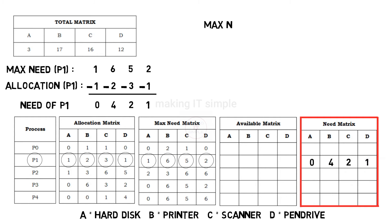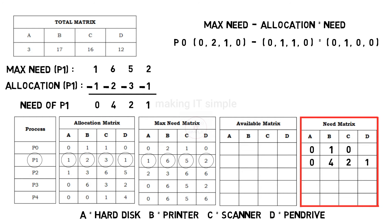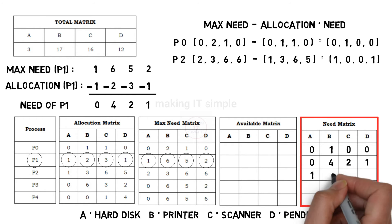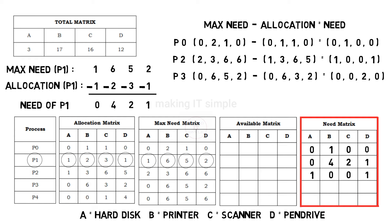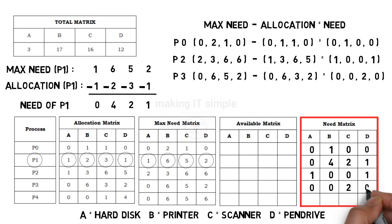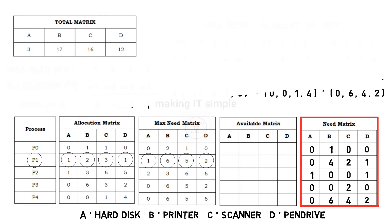So P1's need matrix will be 0, 4, 2, and 1. Need matrix is simply max need matrix minus allocation matrix. So the need of P0 will be 0, 1, 0, and 0; need of P2 will be 1, 0, 0, and 1; need of P3 will be 0, 0, 2, and 0; and need of P4 will be 0, 6, 4, and 2. This is how we calculate the need matrix.